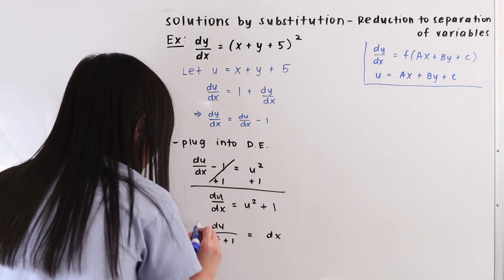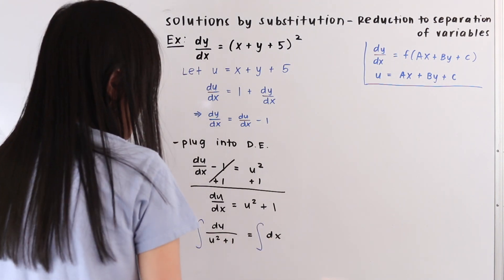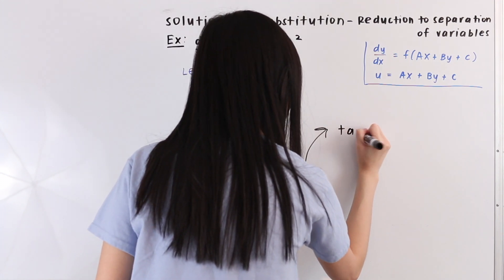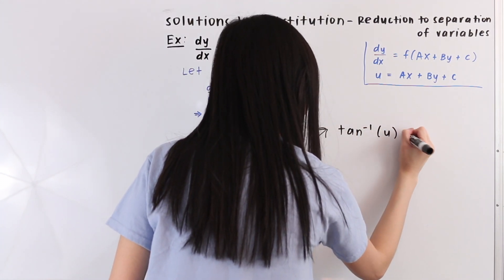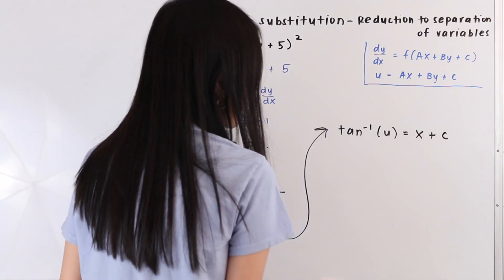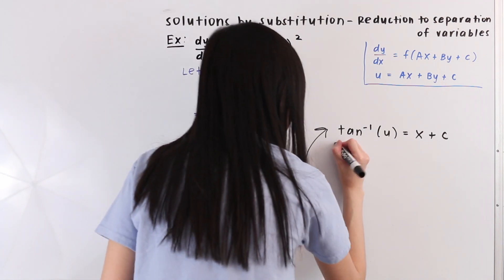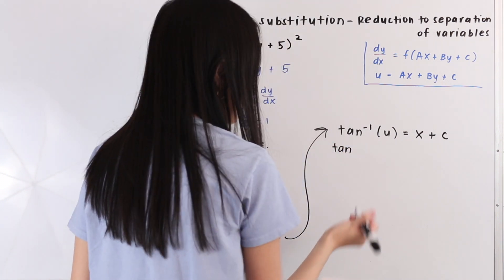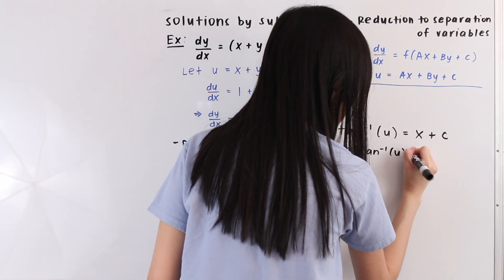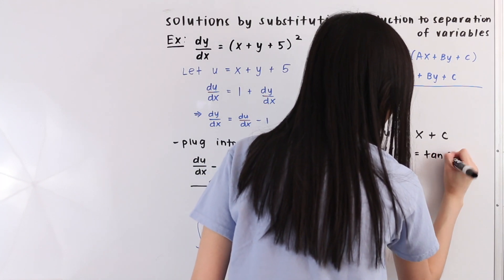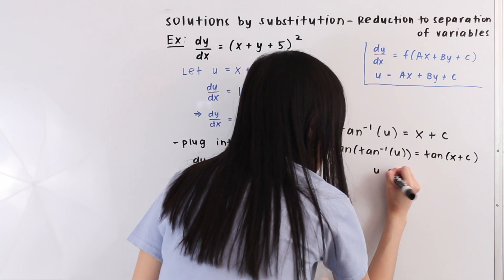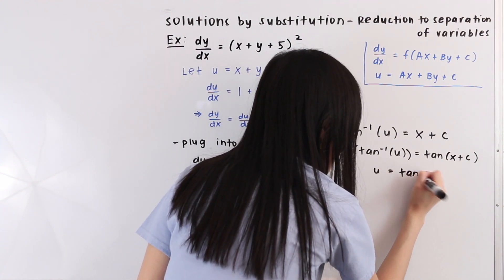Now let's integrate both sides. On the left hand side we get the arc tangent of u, and on the right hand side we just have x plus c. Next, let's solve for u by taking the tangent of both sides. The tangent of the arc tangent of u is equal to the tangent of x plus c, which simplifies to u is equal to the tangent of x plus c.